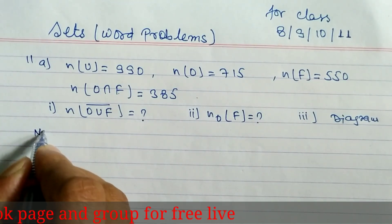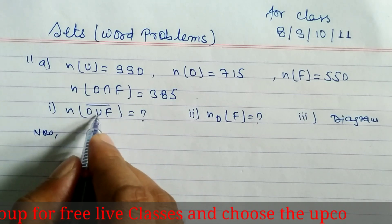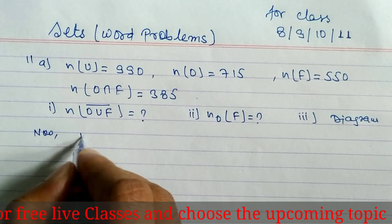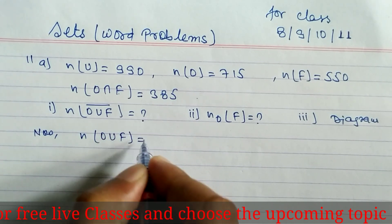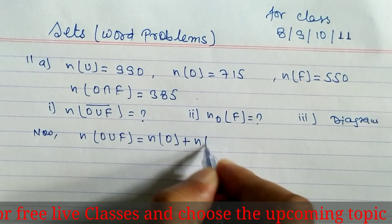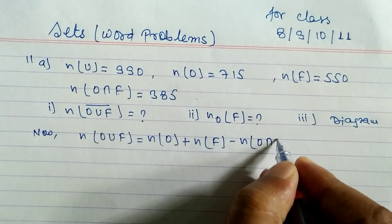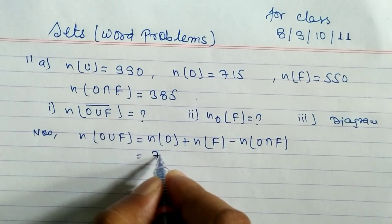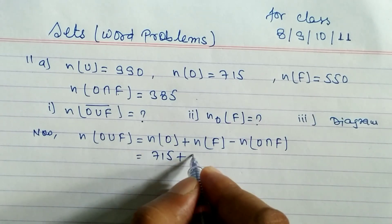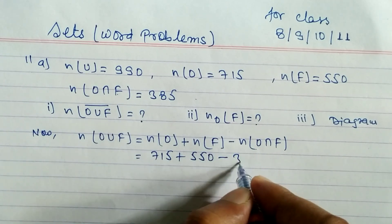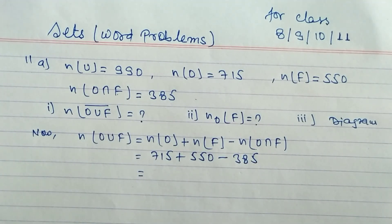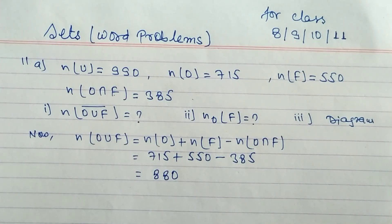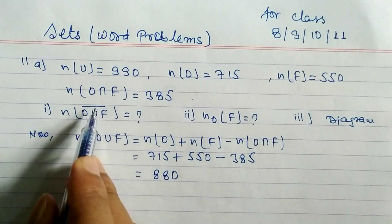To find (O union F) complement, we first need O union F. The formula is: n(O union F) = n(O) + n(F) − n(O intersection F). Substituting: 715 + 550 − 385 = 880. So n(O union F) = 880.